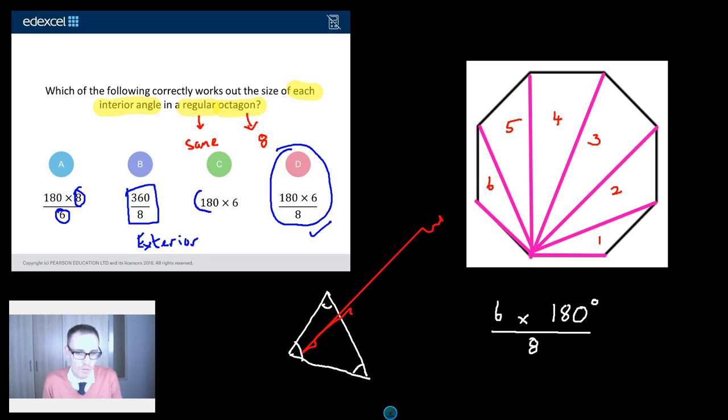And finally, well, we kind of covered this. 180 times six. That's your total interior angles. That's before you actually get around to dividing it by eight.